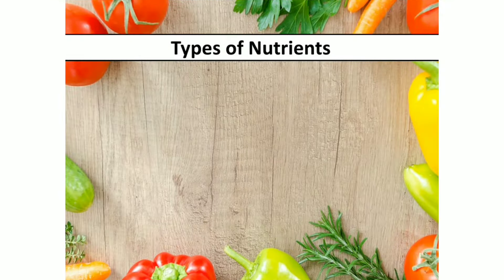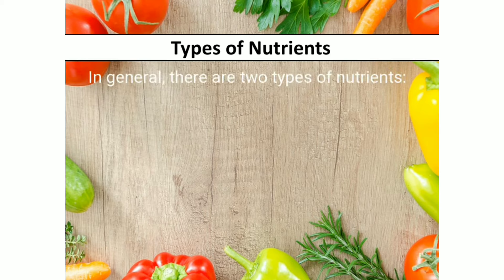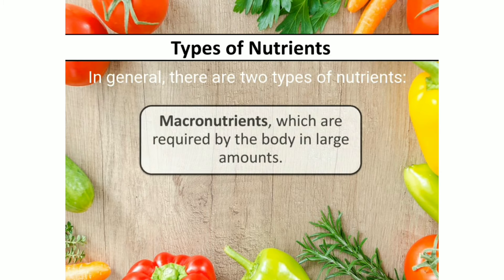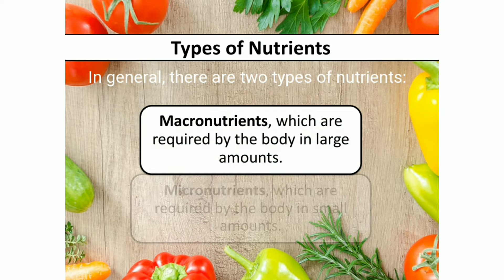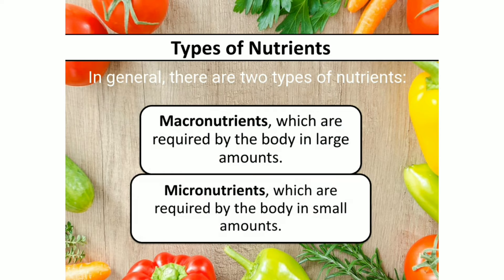Now we will study the types of nutrients. In general, there are two types of nutrients. Number one is macronutrients, which are required by the body in large quantities. Number two is micronutrients, which are required by the body in small quantities.